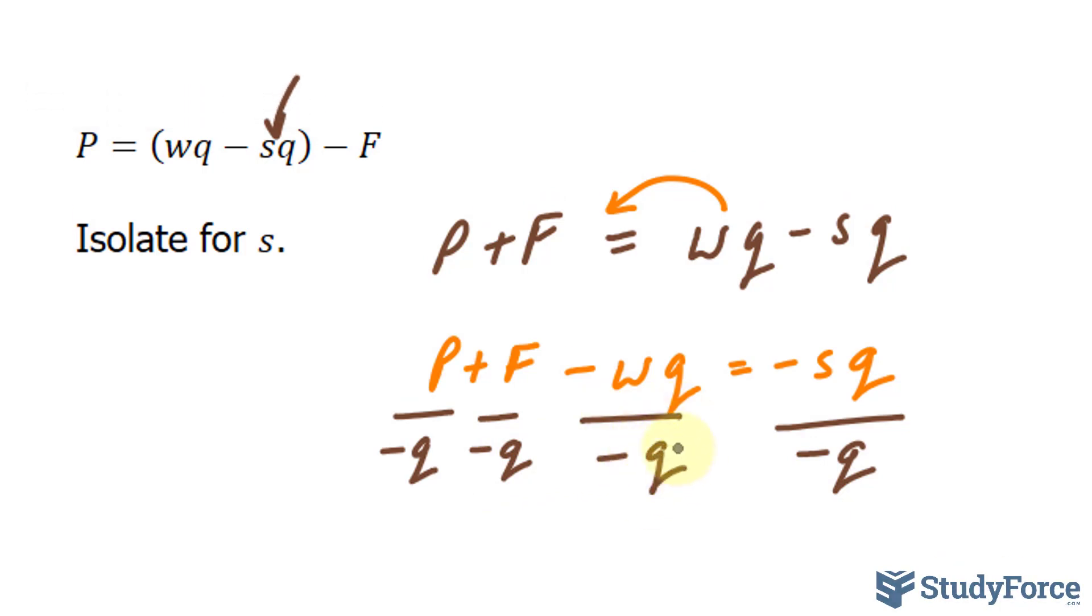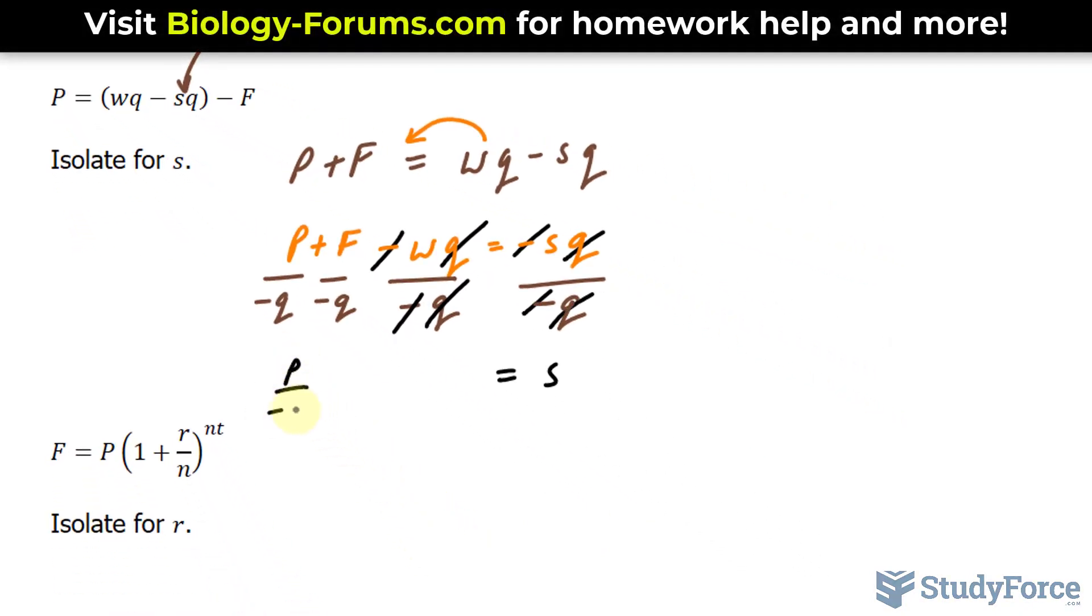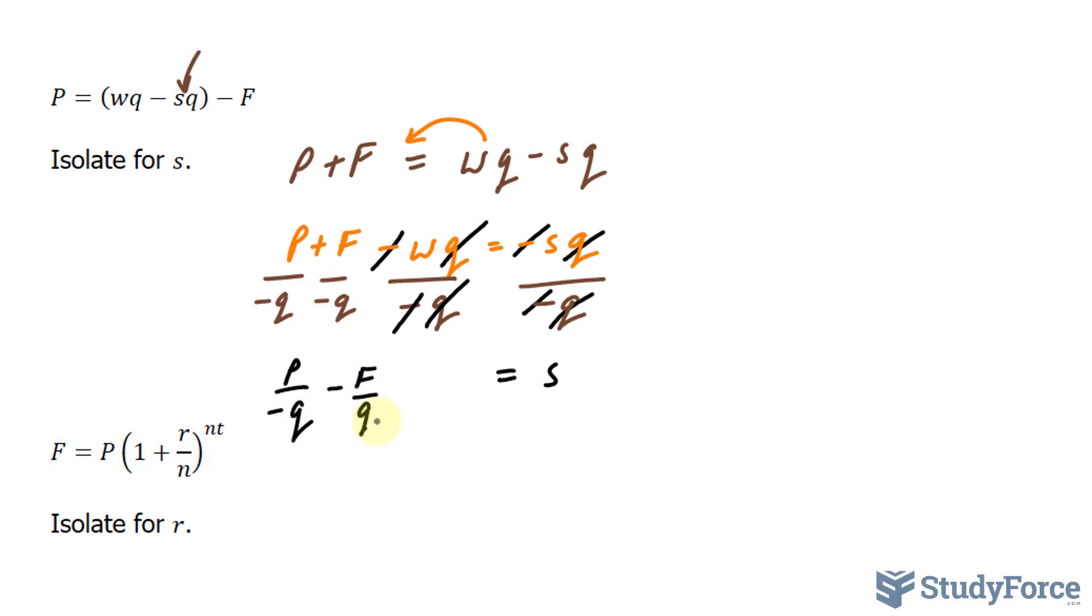Of course, if you don't want to do that, if you want to just write down one common denominator, you can do that as well, but continuing on with what I wrote, this negative and this negative cancel out, so do these two Qs, leaving us with only S on the right side. Also, keep in mind that this negative and this negative will become a positive, and this Q and this Q will go away, leaving us with P over negative Q minus F over Q, this term, and this has become plus W.